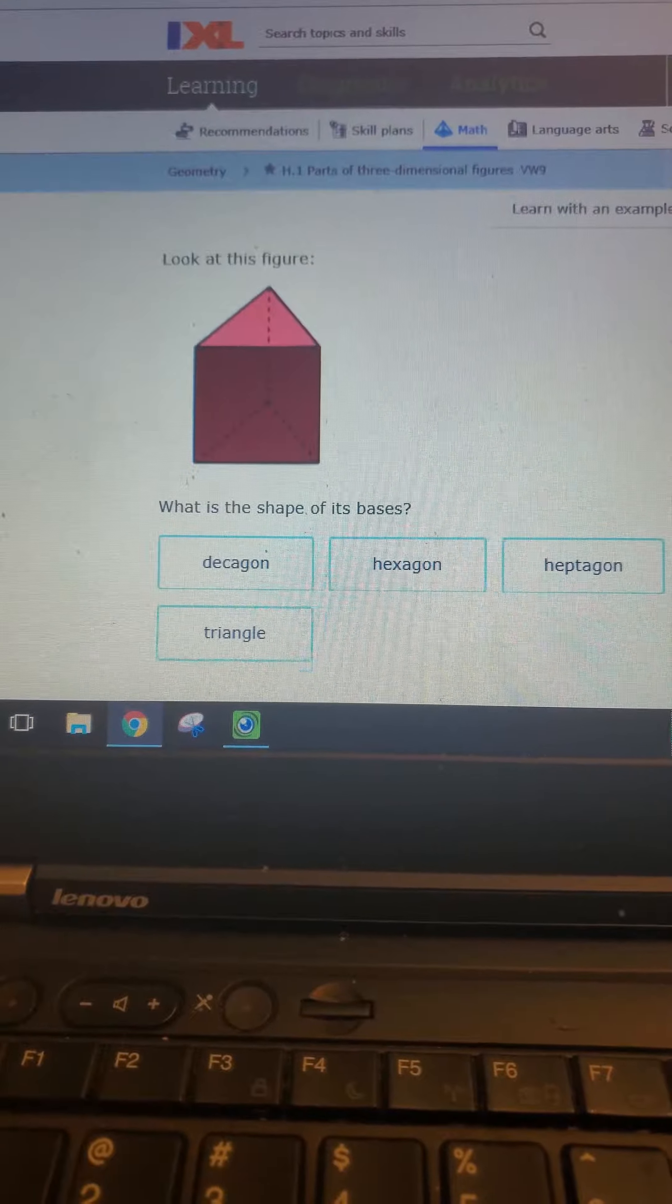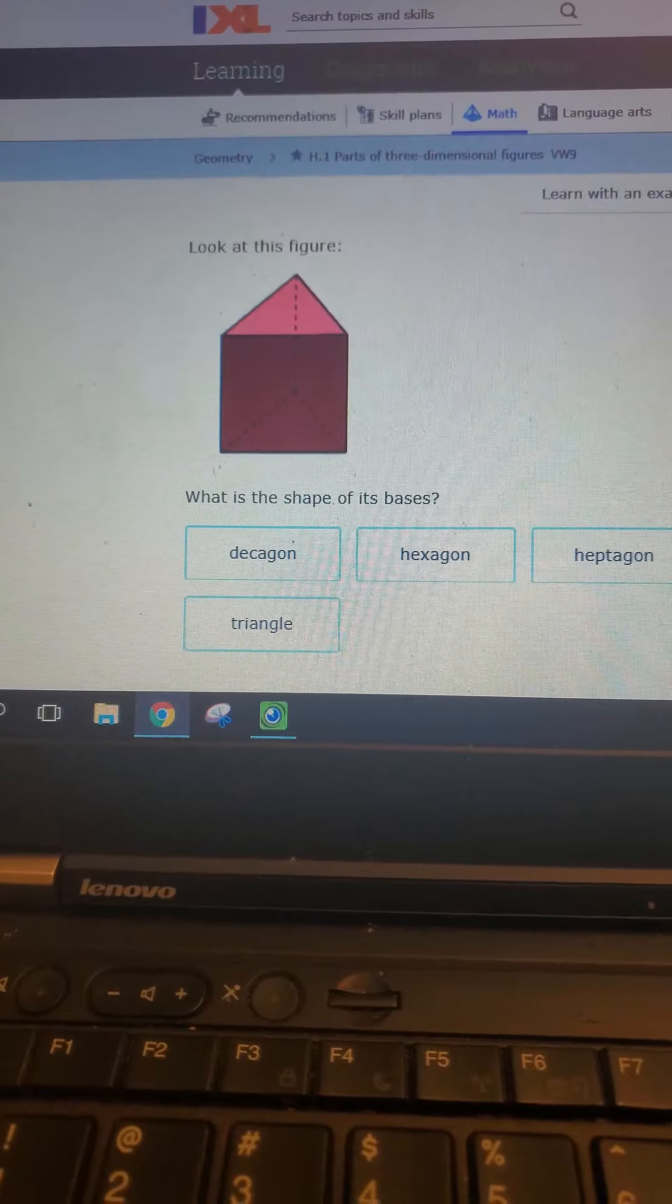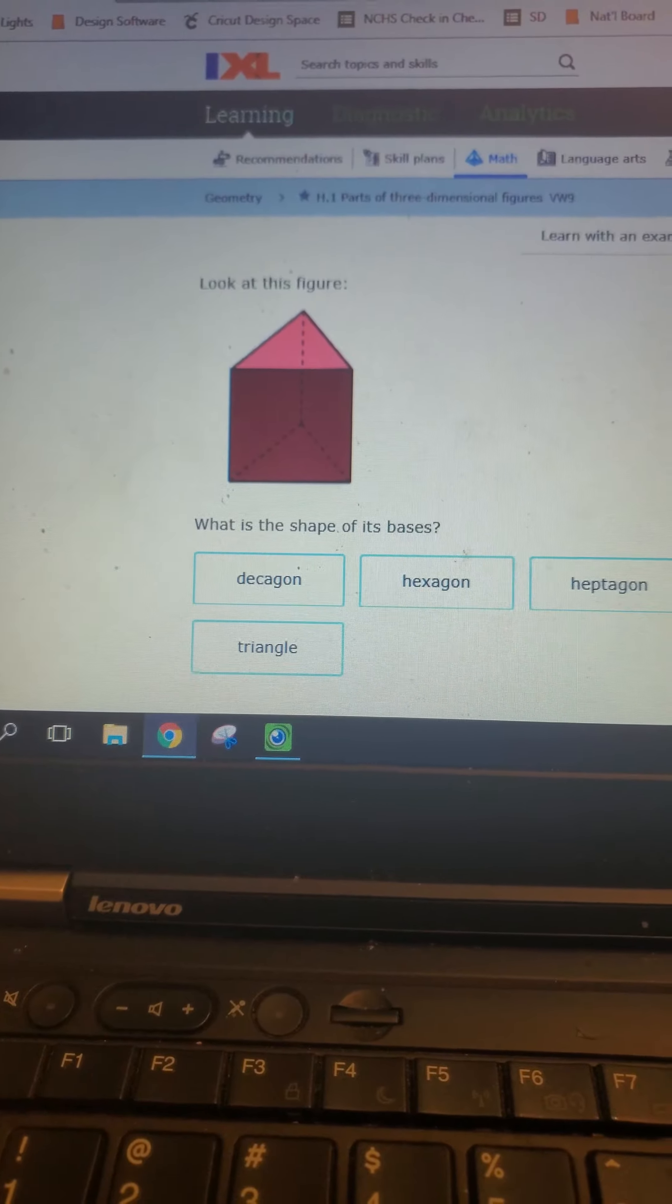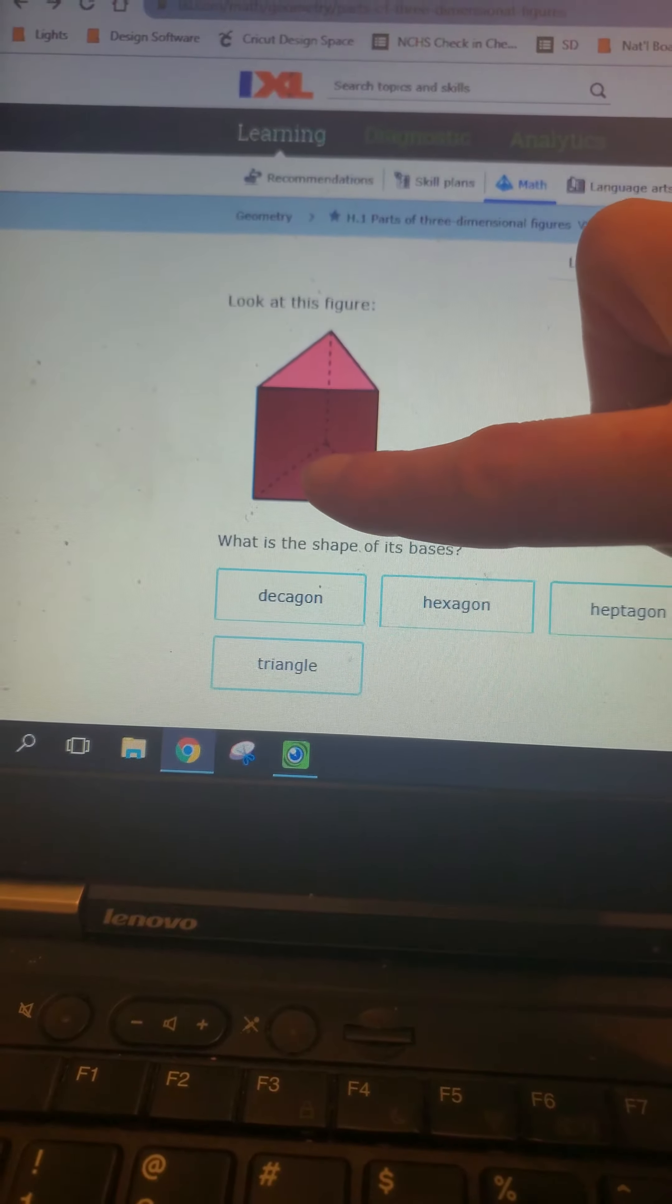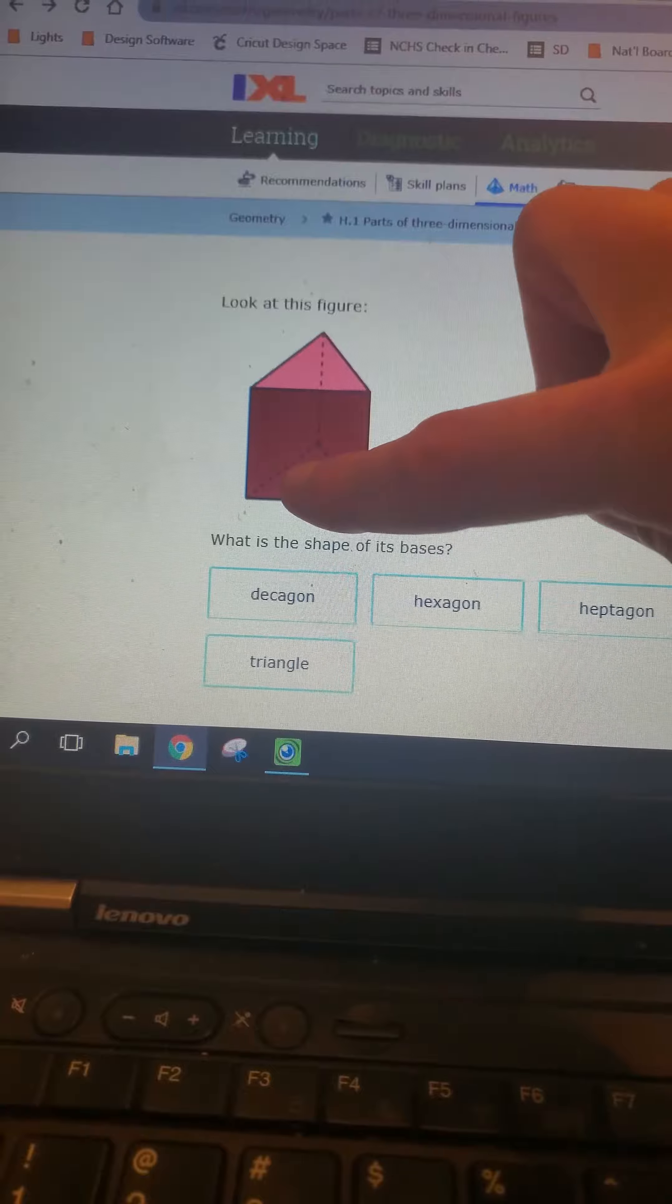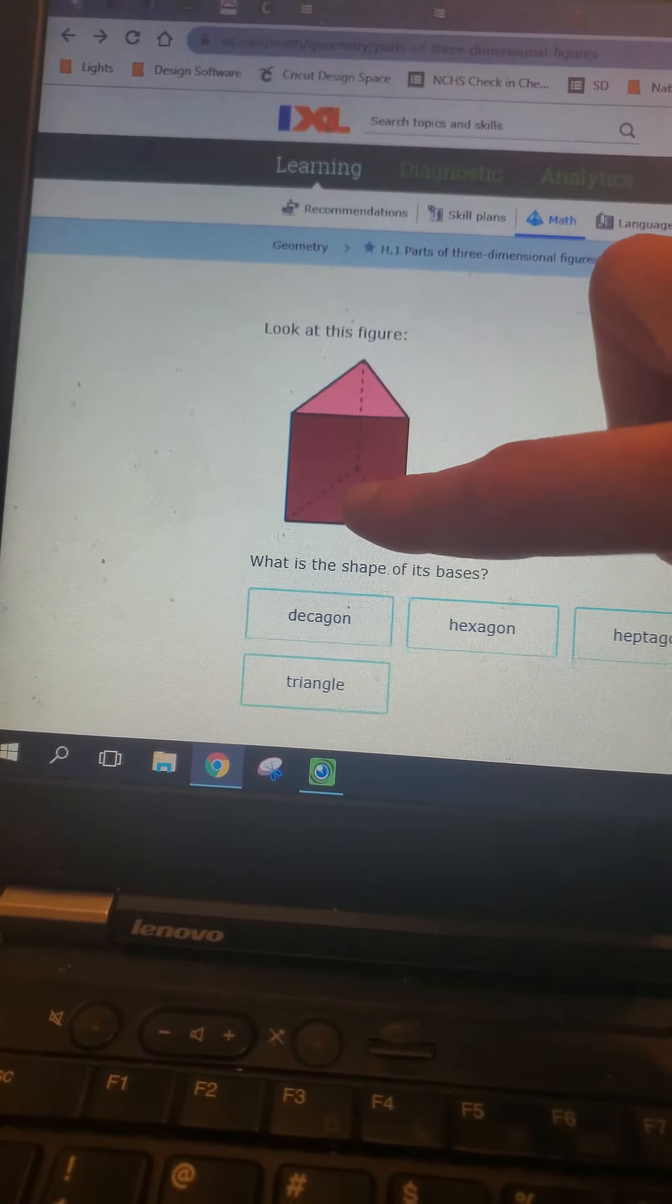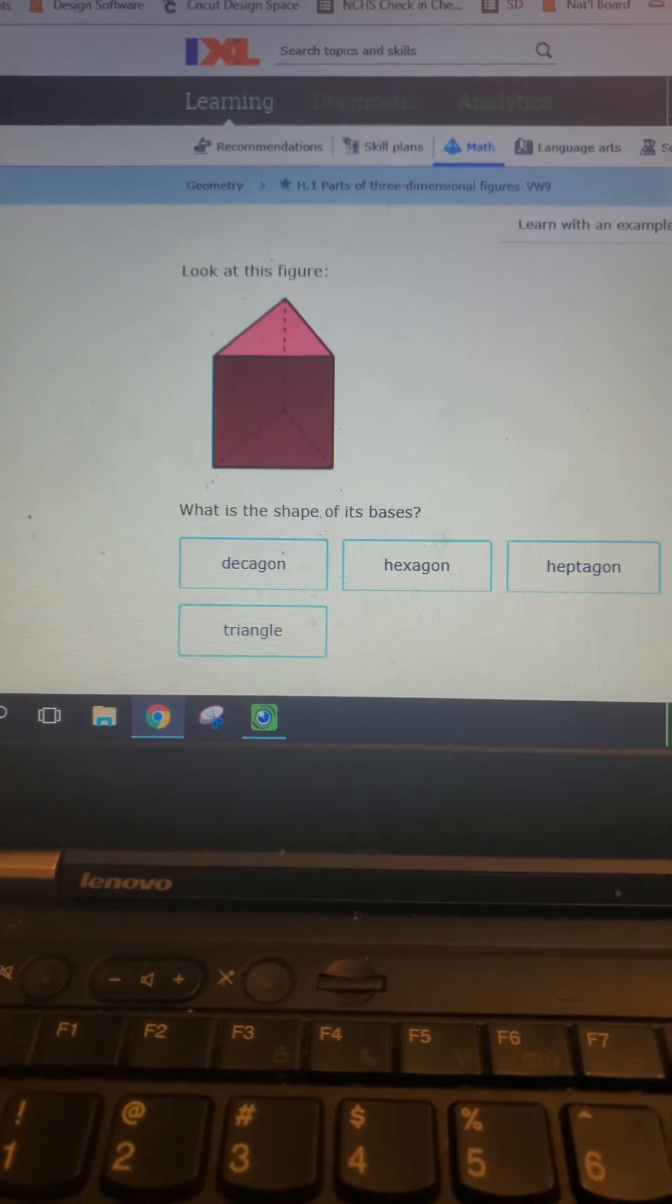So what is the shape of its base? Well, most of these figures are going to be sitting on the base. That's not always the case. They can be turned and not sitting on the base, but you'll see that most of them are sitting on their base. And so the base are the two shapes that are exactly the same. So they're parallel shapes. Those two shapes will never touch, and they're exactly the same. We have two triangles. So the shape of the base is a triangle.